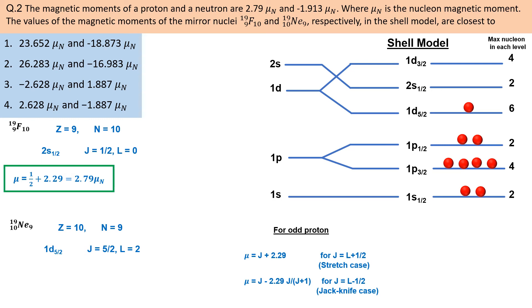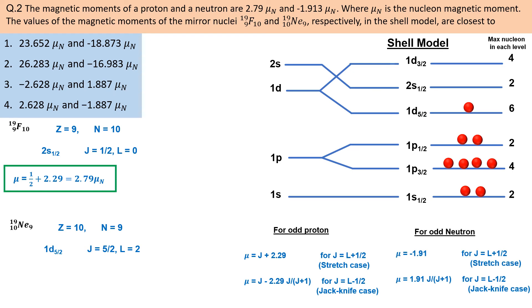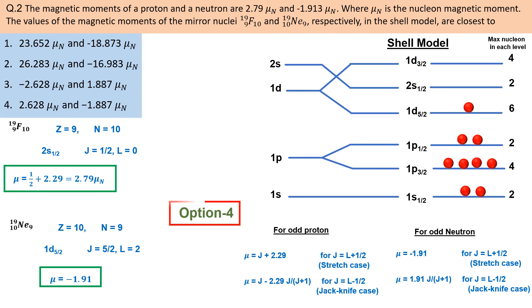That means neon ko shell model se explain kiya ja sakta hai. Agar kisi nucleus mein odd neutron ho to unka magnetic moment is relation se diya jaata hai. Chuki neutron d orbit mein arrange hua hai jiske liye orbital angular momentum 2 hota hai, to d orbit ke do levels possible ho sakte hain: L+1/2 ke according 1d5/2 level aur L−1/2 ke according 1d3/2 level. Chuki neon mein last neutron 1d5/2 level mein hai, isliye magnetic moment stretch case se calculate hoga, jo minus 1.91 μN magnetic moment deta hai. Options se compare karein to fluorine aur neon dono ke magnetic moment option 4 mein diye gaye magnetic moment ke sabse close hain.